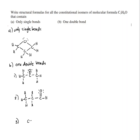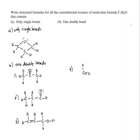The third structure has a carbon-carbon double bond: C=C-C, with two H's on the left carbon, one H on the middle carbon, two H's on the right carbon, and then an O-H group. That is also C3H6O.